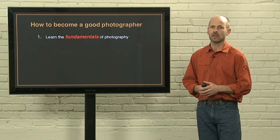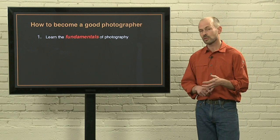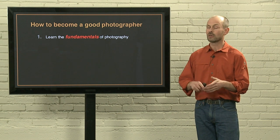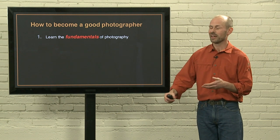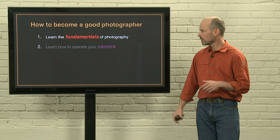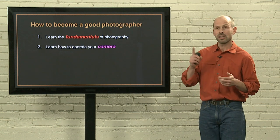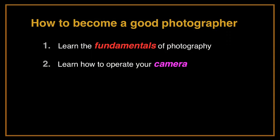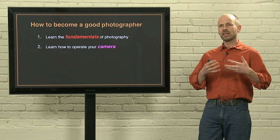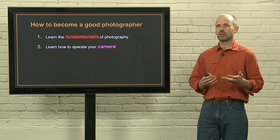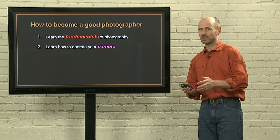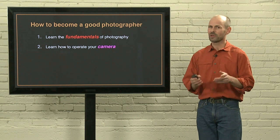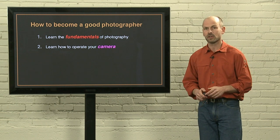It's about learning the fundamentals of photography — things like shutter speed, aperture, ISO, and that list goes on and on. Beyond that, you're going to need to learn how to operate your camera. Every camera has a plethora of menus and features, and you need to learn which ones are important, which ones are not so important, and which ones you're going to use for your type of photography.